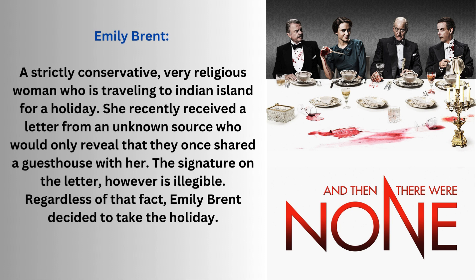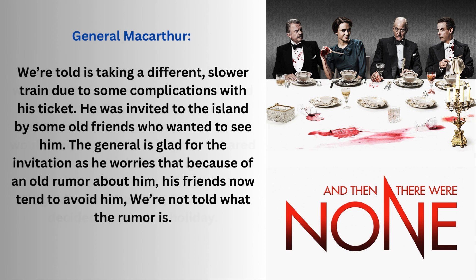Emily Brent is a strictly conservative, very religious woman who was traveling to Indian Island for a holiday. She recently received a letter from an unknown source who would only reveal that they once shared a guesthouse with her. The signature on the letter is illegible, but regardless Emily Brent decided to take the holiday. General MacArthur is taking a different, slower train due to some complications with his ticket. He was invited to the island by some old friends who wanted to see him. The general is glad for the invitation as he worries that because of an old rumor about him, his friends now tend to avoid him. We're not told what the rumor is.